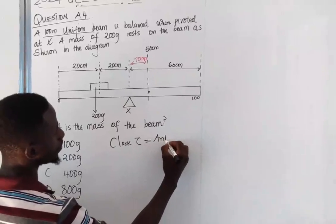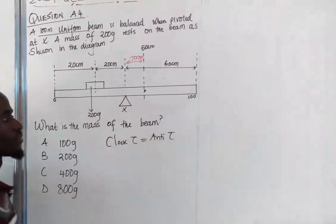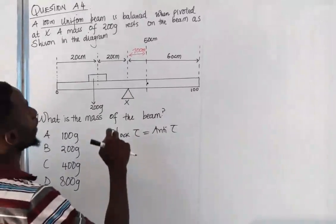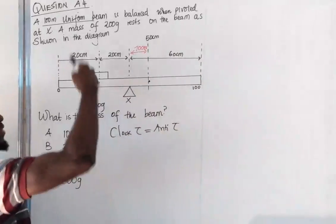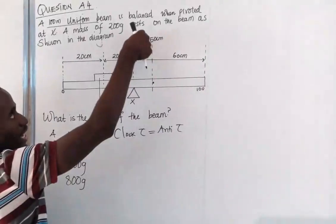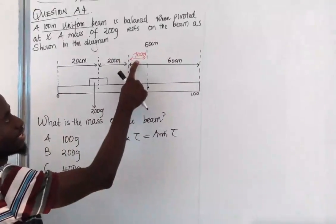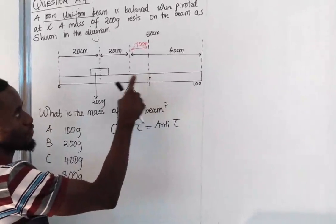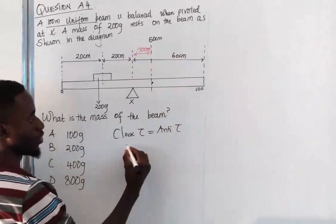This is the symbol for moment. So clockwise, anticlockwise. In the clockwise direction we have 10. Why am I getting 10? You always get the distance from the pivot. So the center is here, so I'm going to get the center from the pivot which is 10.